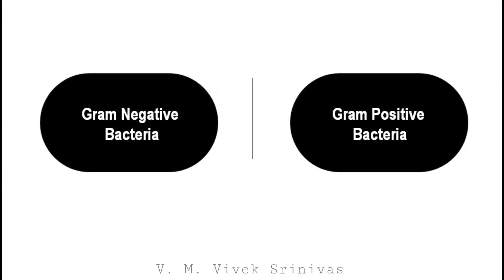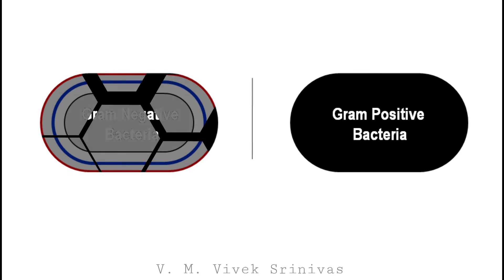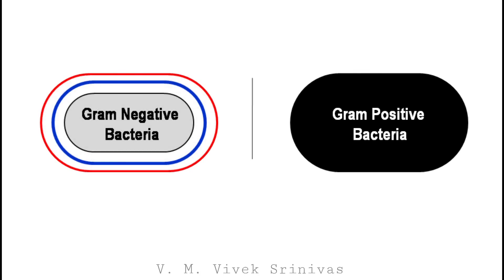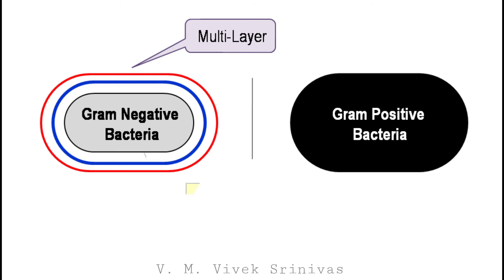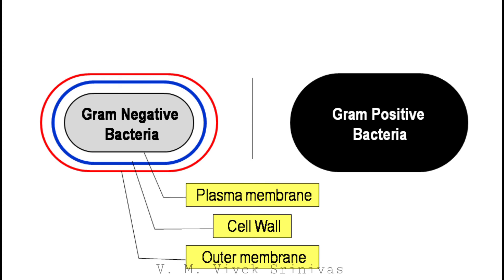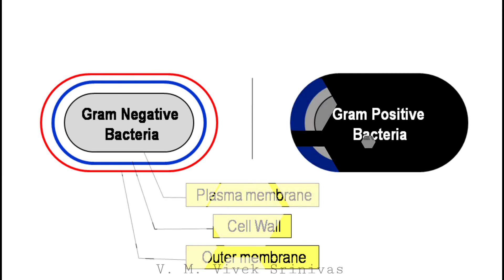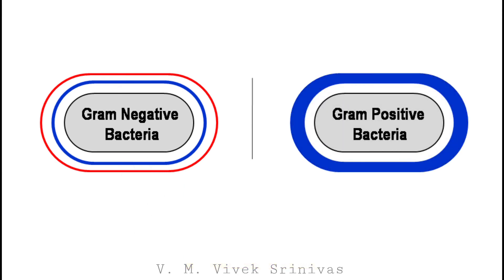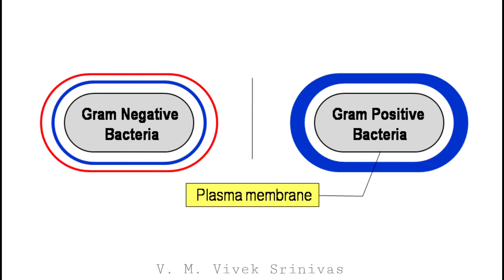The cellular contents of the gram-negative bacteria are protected by the multi-layered structure consisting of the plasma membrane, the cell wall, and the outer membrane. Whereas the cellular contents of the gram-positive bacteria are protected by the plasma membrane and the cell wall.